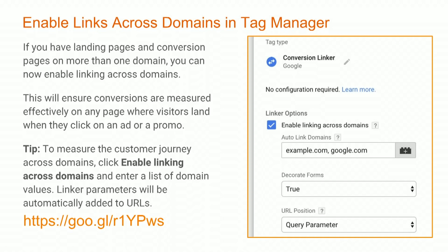So what's new in the world of Google Analytics? The first piece is enabling links across domains in Tag Manager. For those who use Tag Manager, you want to track campaigns and know exactly how the customer came in, what they did, and how conversions are measured. Now you have the ability to link across multiple domains — we'll track that using a first-party cookie. Just click Enable Linking Across Domains, enter the domain values, and link parameters are automatically added to the URLs.